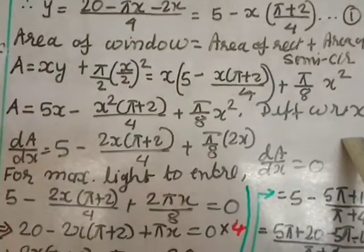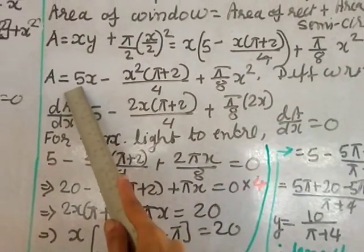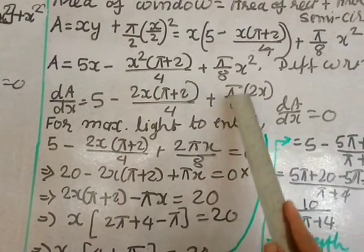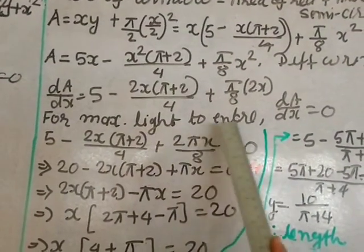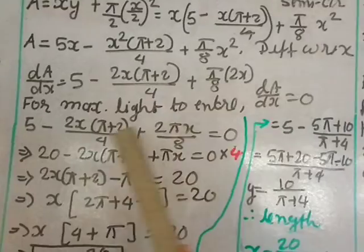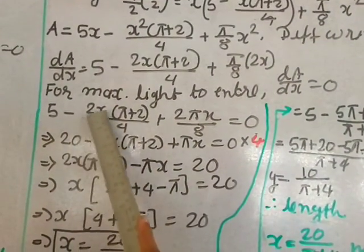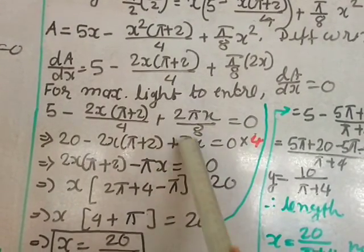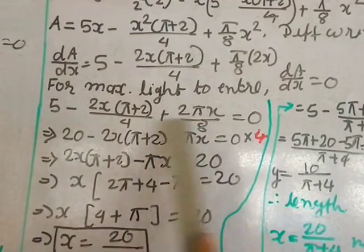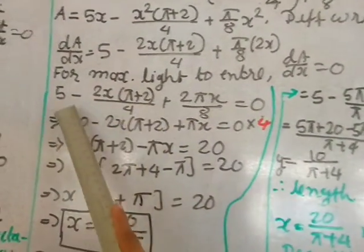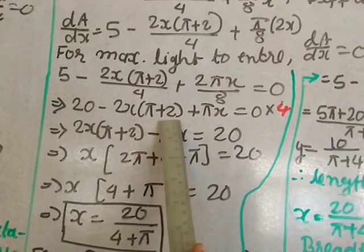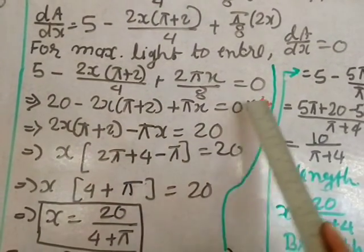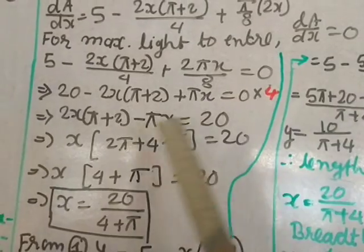Differentiating with respect to x: dA/dx = 5 − 2x(π+2)/4 + 2πx/8 = 5 − x(π+2)/2 + πx/4. For maximum light, set dA/dx = 0. Taking LCM of 4: 20 − 2x(π+2) + πx = 0, which gives 20 − 2πx − 4x + πx = 0.